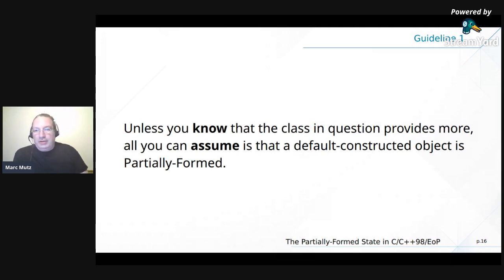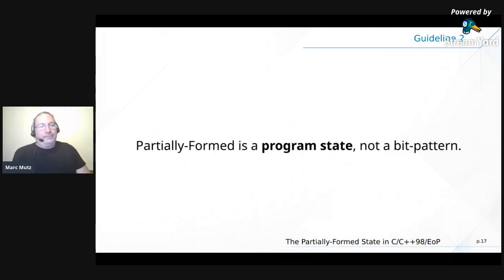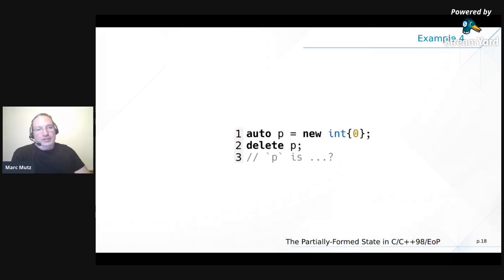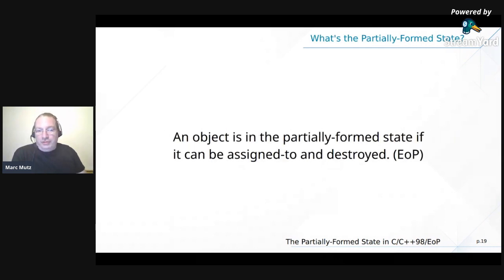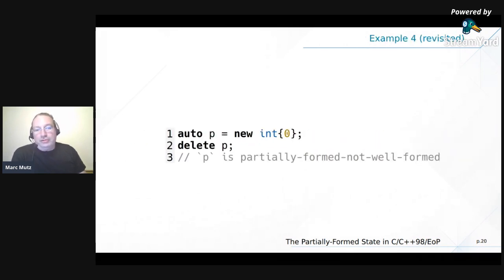Guideline two: partially formedness is a program state, not a bit pattern. Here's an example: we allocate an int on the heap, initialize it with zero, then delete it. After delete, the pointer p — what can we do with it? We can assign to it and destroy it. We are not allowed to read it. So that thing is Partially Formed: a partially formed object can be assigned to and destroyed, and we know it is not well-formed.